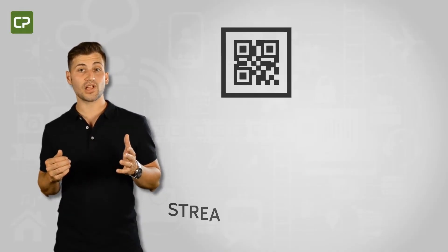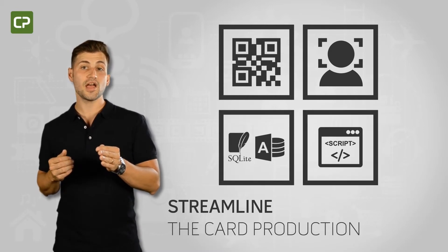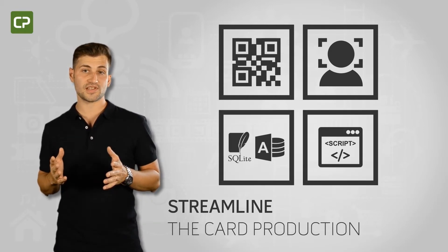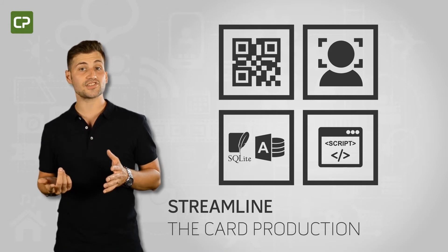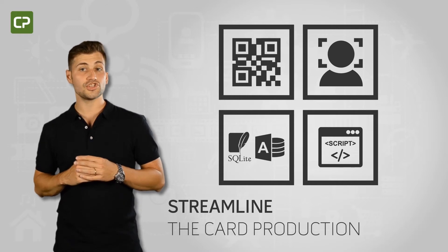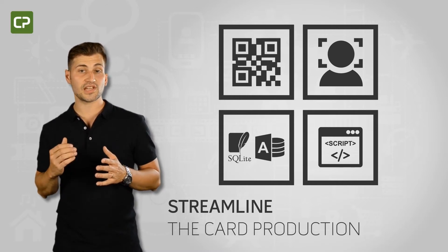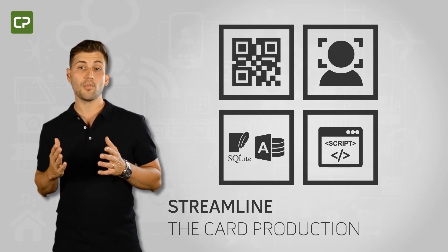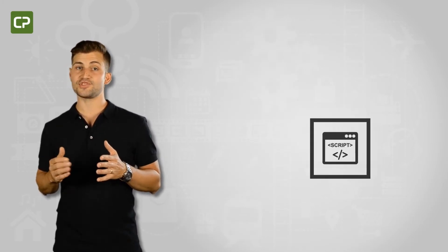XM Edition streamlines and responds to your photo ID printing needs by automating the photo editing process, connecting directly to your MS Access and SQLite database, and allowing you to personalize the card printing workflow to your needs through script. These features translate into fewer mistakes, greater efficiency, better service and security, and a lot of time saved.